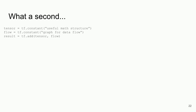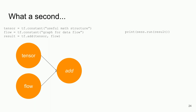Here's a little quiz. I create a node called 'tensor' — a constant that says 'useful math structure.' I create another node called 'flow' — 'graph for data flow.' I create a result which adds tensor and flow together. So you're telling me that if we take tensors, which are data structures for linear algebra, and define flow, then we would get TensorFlow.